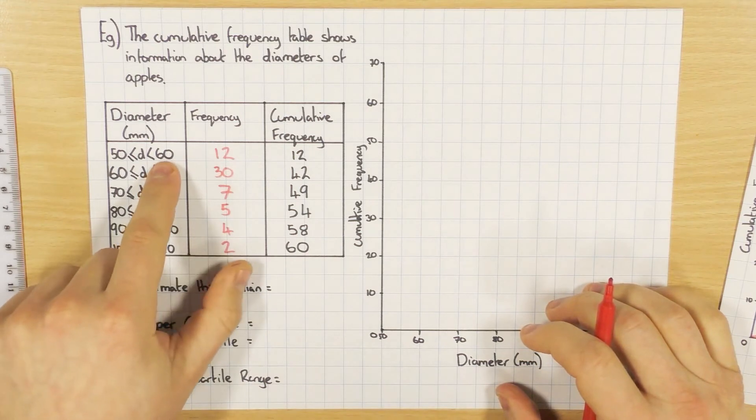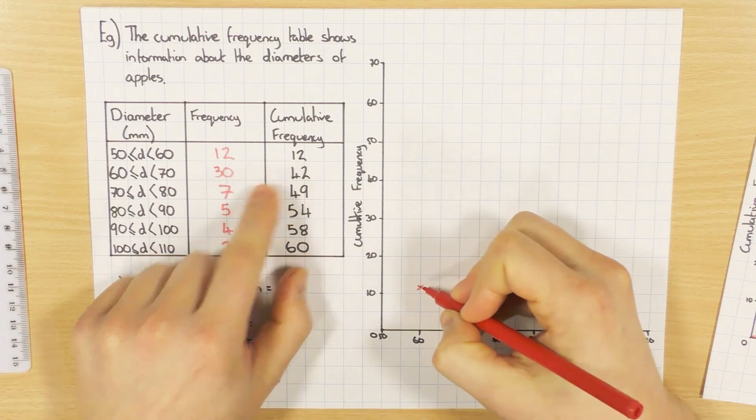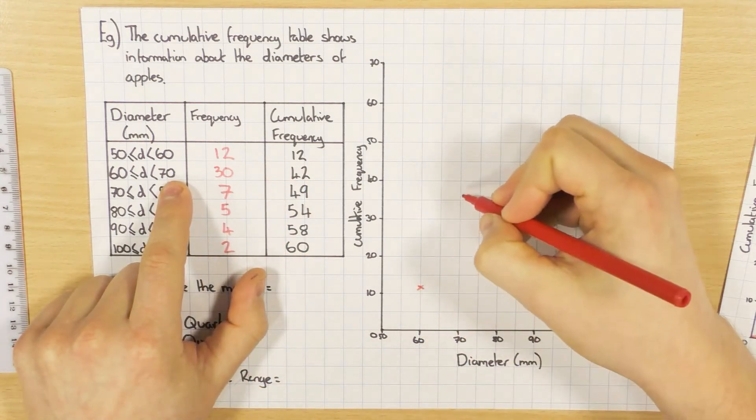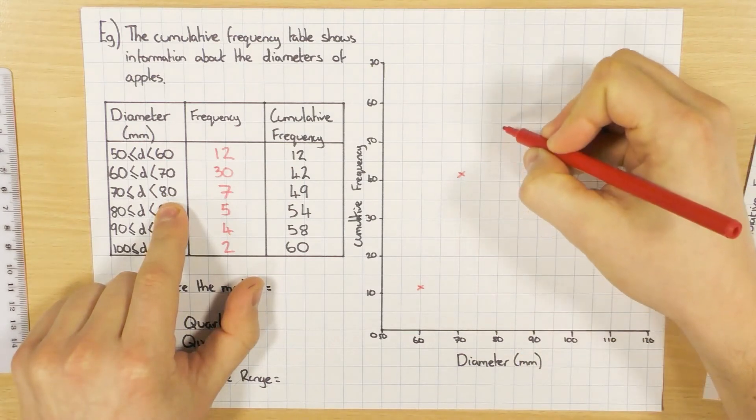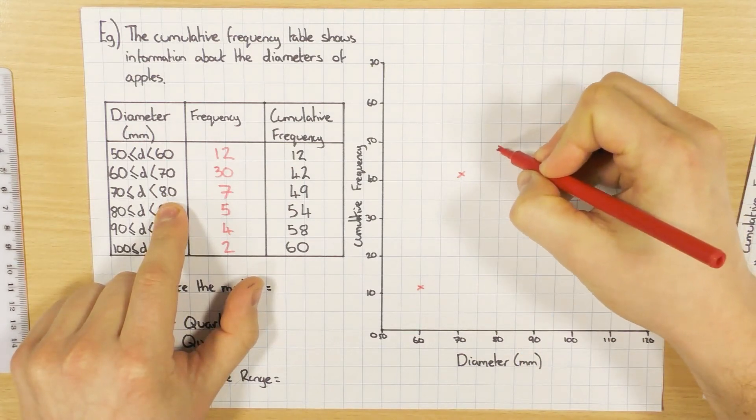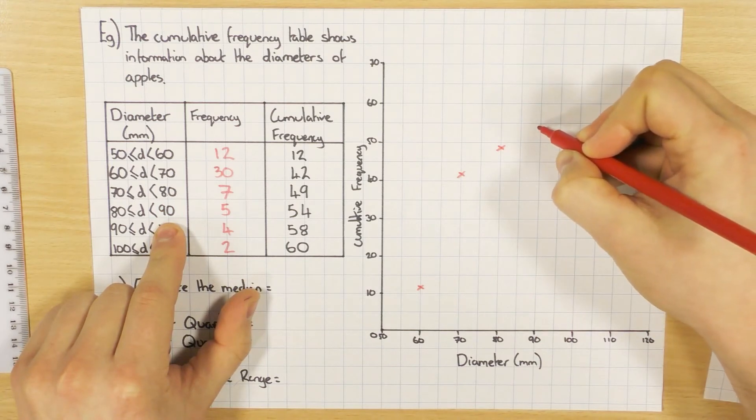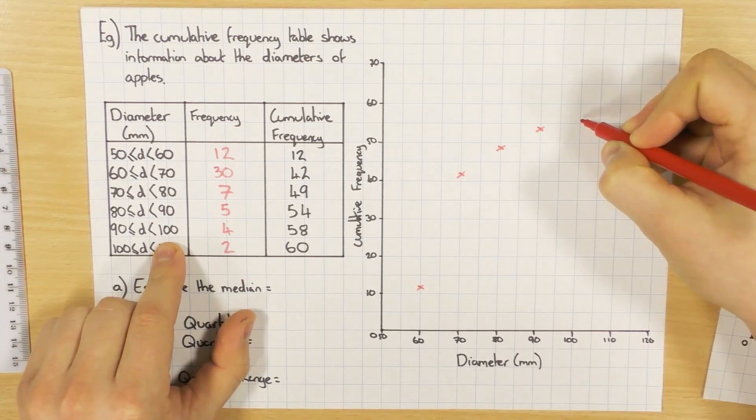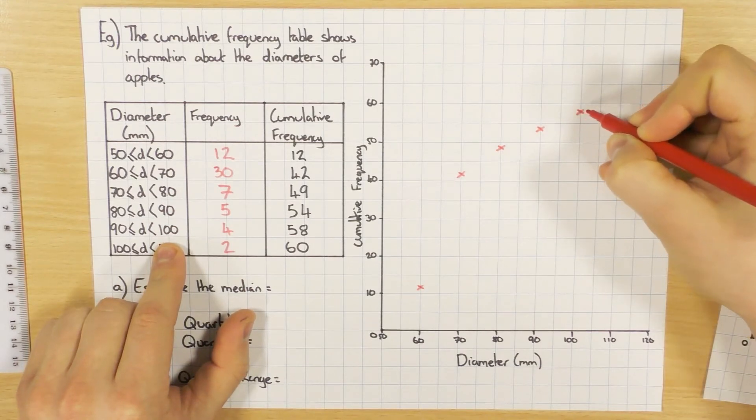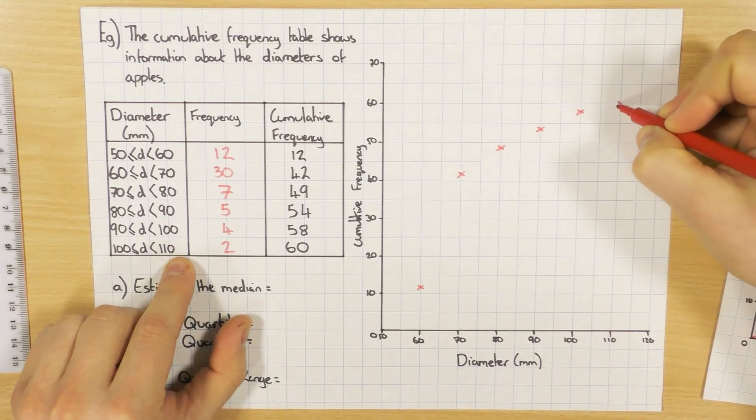So remember, plot in the upper bound. So this time it's 60 and 12, 70 and 42, 80 and 49, 90 and 54, 100 and 58, be about there, and 110 and 60.